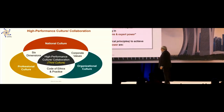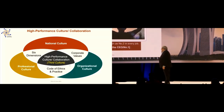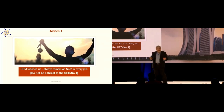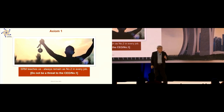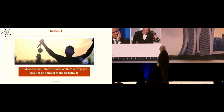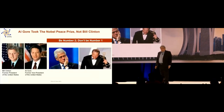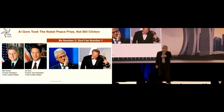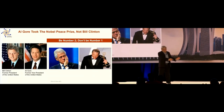Now let's move into the 10 axioms. The first one: don't be number one, always be number two, because number one is the smart guy and number two is the wise guy. Look at who got the Nobel Peace Prize — Al Gore. Bill Clinton had a lot of issues because he was number one. Everyone attacks the number one. Nobody attacks the number two. But who keeps their job? Number two.